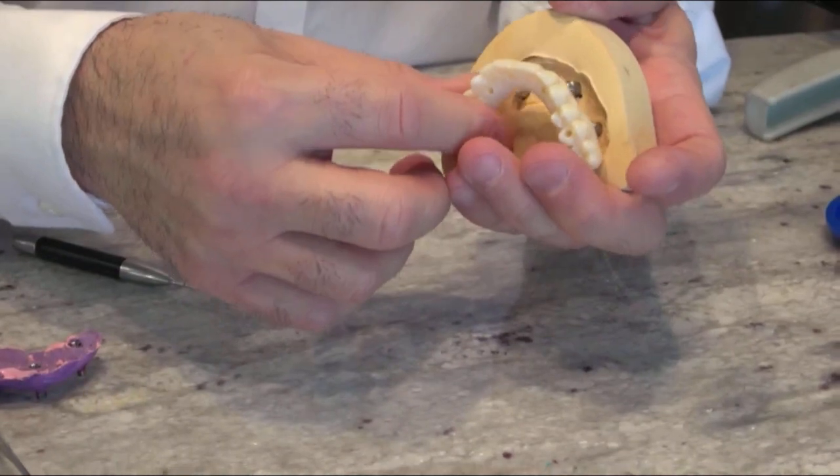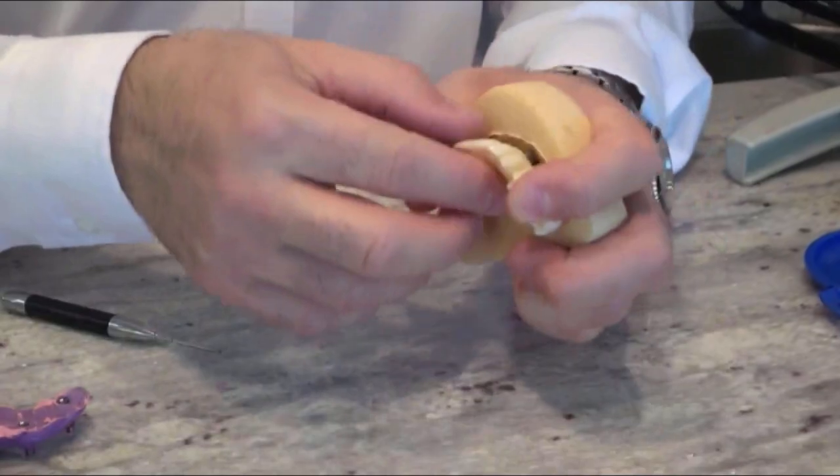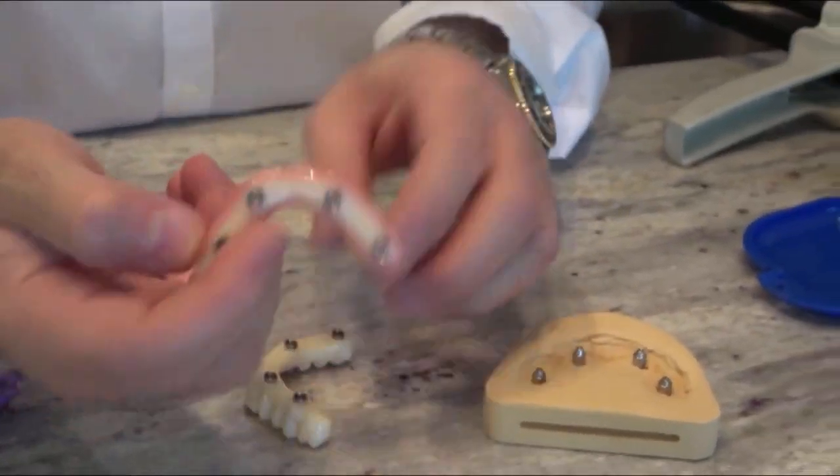Once this is tried in the mouth, you adjust the bite, check the soft tissue and tag your surface. This is the same thing but with pink composite you can see.